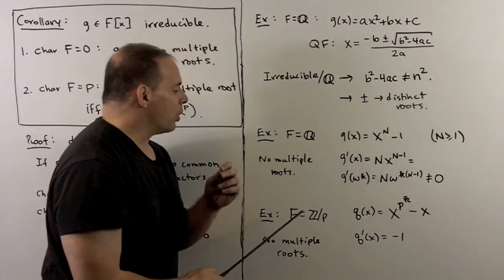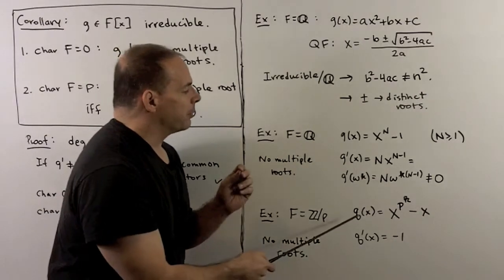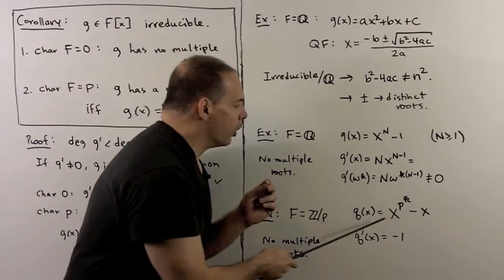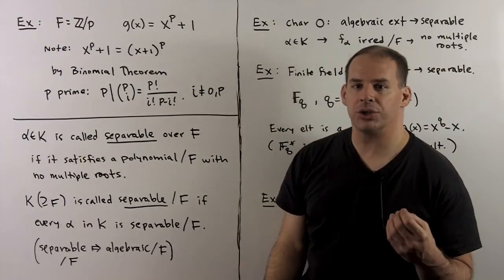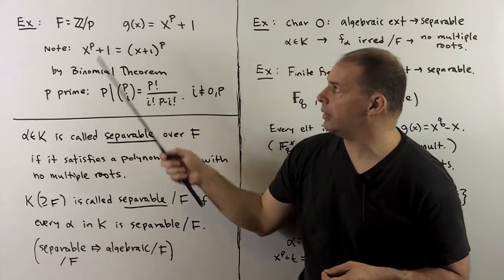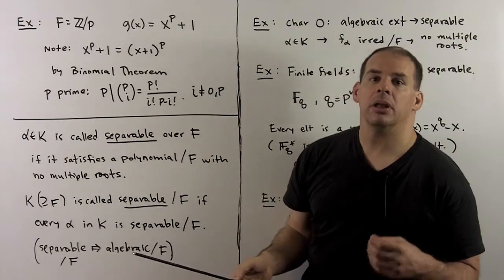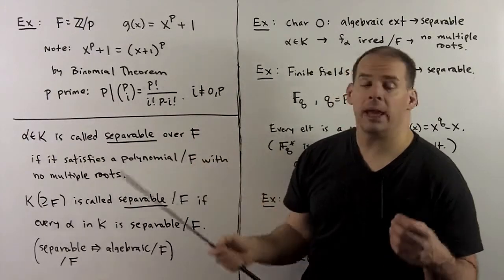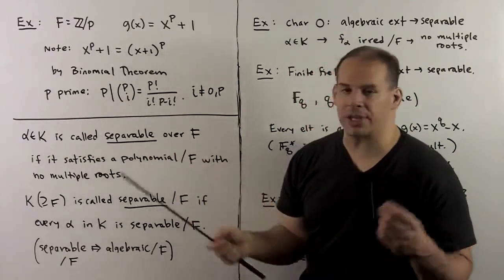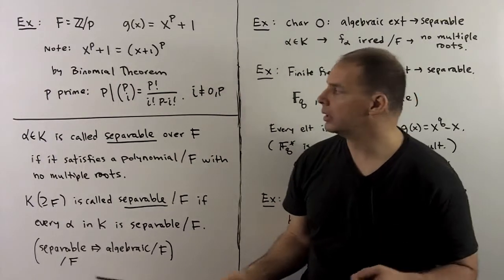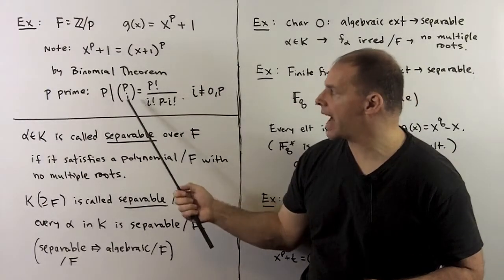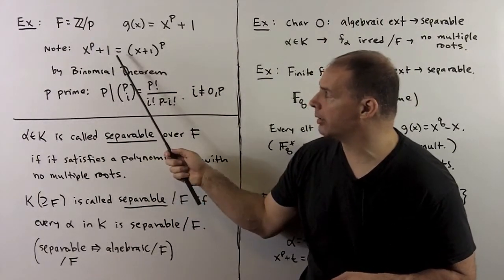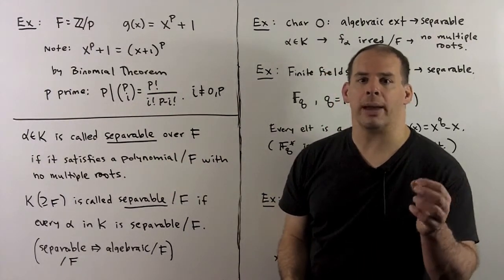An important example for later: working over Z/pZ in characteristic p, taking the polynomial x^(p^k) − x, the derivative goes to −1, so this polynomial has no multiple roots. Here's a good example in characteristic p: let f = Z/pZ with p prime, and g(x) = x^p + 1. The derivative is zero, so we can express g(x) as a function of x^p, with h(y) = y + 1. To see the multiple roots explicitly: x^p + 1 = (x + 1)^p by the binomial theorem, since p is prime and p divides the binomial coefficient p choose i when i is not 0 or p, so all middle terms drop out. Thus the polynomial has a root at −1 with multiplicity p.